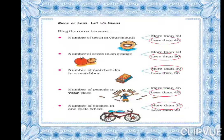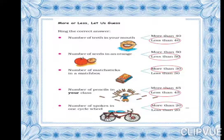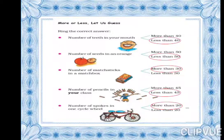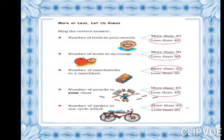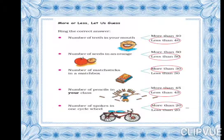First answer: number of teeth in your mouth — less than 40. Because humare mouth mein 28 ya 32 teeth hote hain. Number of seeds in an orange — ek orange mein minimum 10 ya 12 seeds hote hain, toh less than 50.